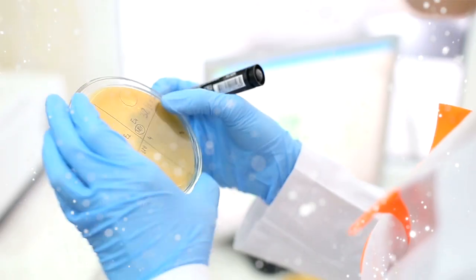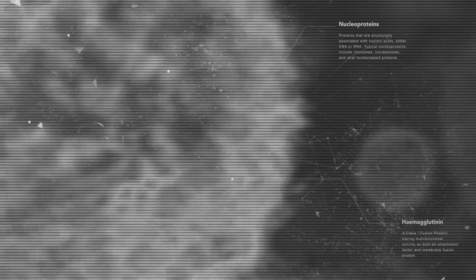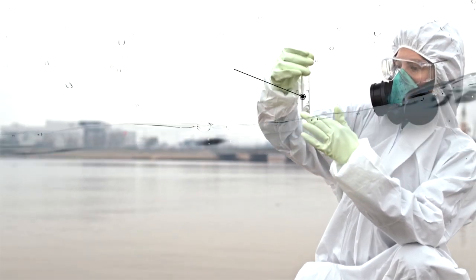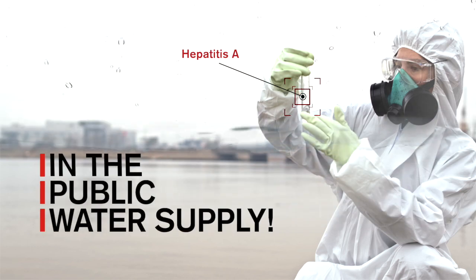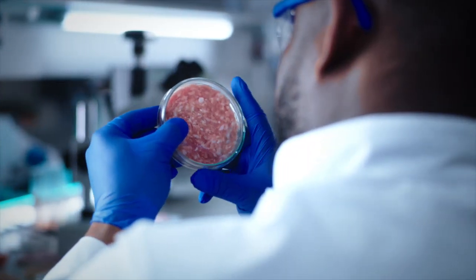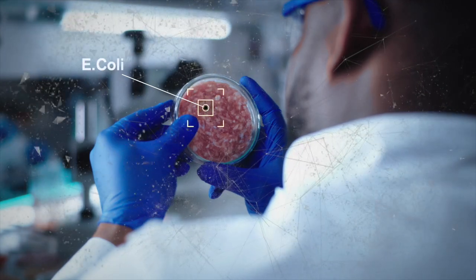If contamination occurs, it's important to identify the offending microbe's classification. For example, microbial testing of water could identify hepatitis A in the public water supply. A lab test for food products could discover a strain of E. coli before the food hits the shelf.